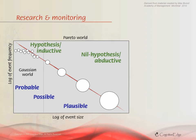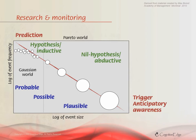He realizes the significance of what actually happened, as a result of which we get penicillin. This is all about switching from a world of prediction to a world of how do we trigger anticipatory awareness, when effectively the threat horizon or opportunity horizon gives some indication of unusual or black swan-type events.